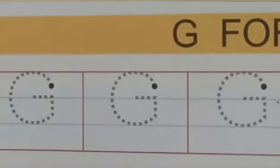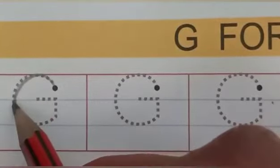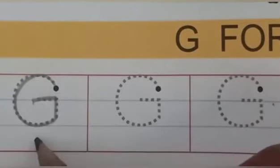Yes, try again. Make a curve, go to center line, and make slipping line. This is letter G.